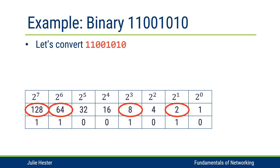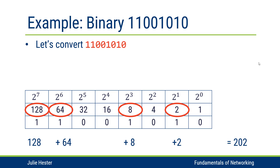In this example, that's one twenty-eight, sixty-four, eight, and two. To get the decimal equivalent of this binary number, all I have to do is add up the circled numbers. So I'll add one twenty-eight plus sixty-four plus eight and two, and I'll get decimal two hundred and two.